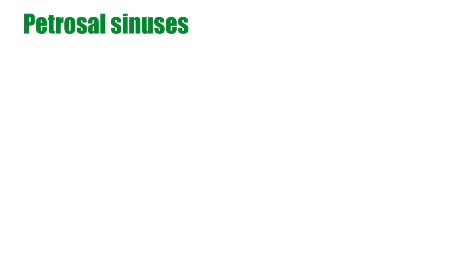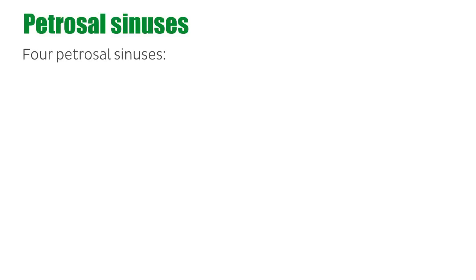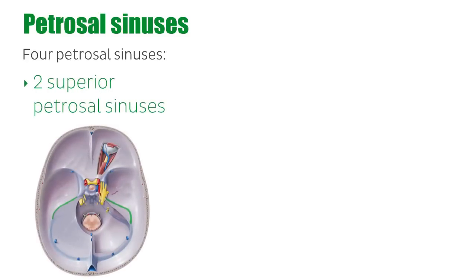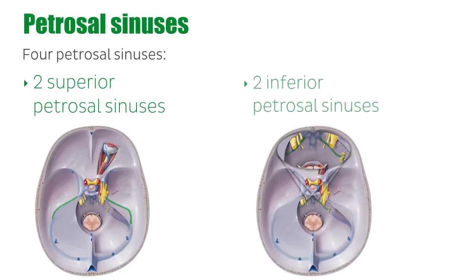The petrosal sinuses are paired dural venous sinuses. There are four petrosal sinuses leaving the middle cranial fossa: two superior petrosal sinuses, one on the left side and one on the right side, and two inferior petrosal sinuses, also located bilaterally.